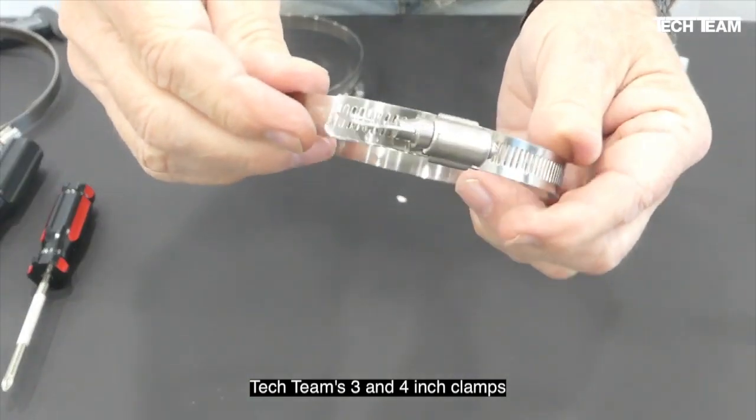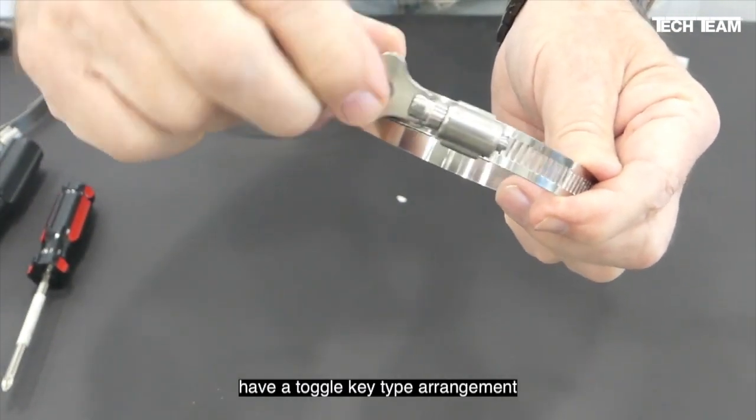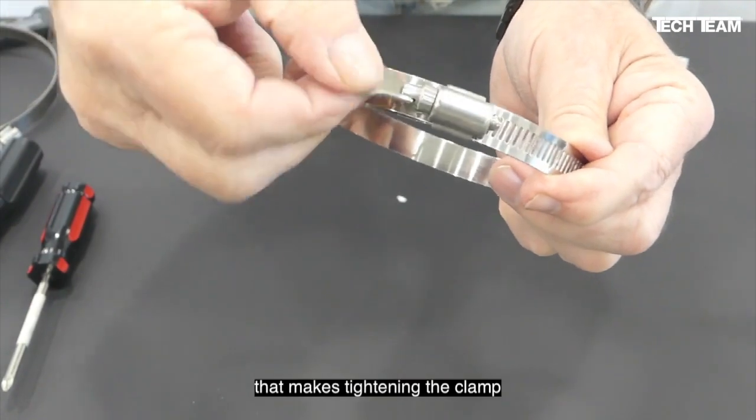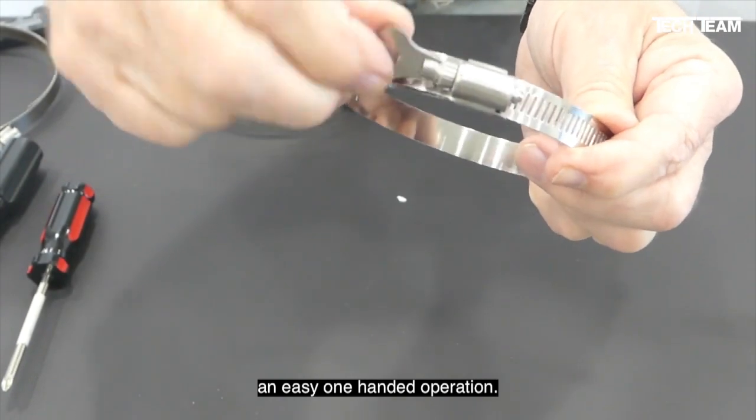Tech Team 3 and 4 inch clamps have a toggle key type arrangement that makes tightening the clamp in tight spaces an easy one-handed operation.